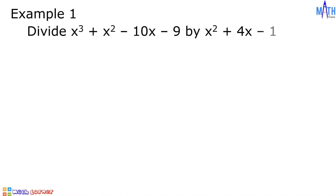Example number 1: let us divide x cubed plus x squared minus 10x minus 9 by x squared plus 4x minus 1. The first step is to express the dividend and the divisor in standard form. In this example, the dividend and the divisor are already expressed in standard form.